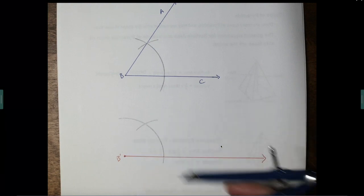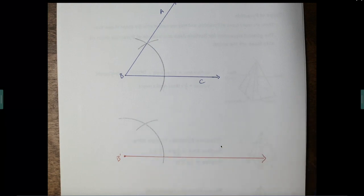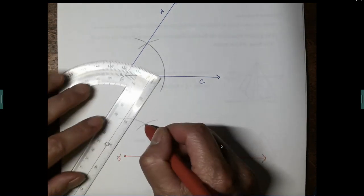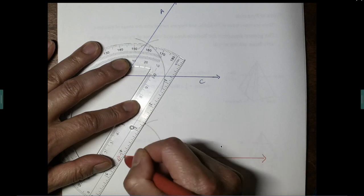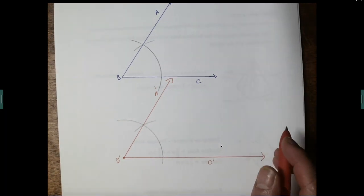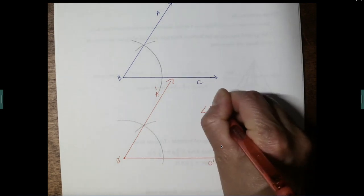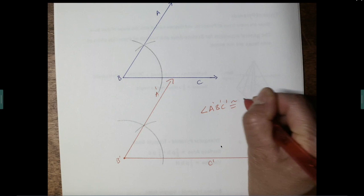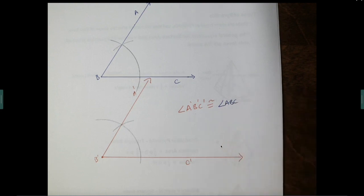This arc corresponds to that arc, and this intersection point corresponds to that intersection point. We now have two points, and two points determine one unique line. Connect these two points — this intersection point and your vertex — to finish the copy. We know that angle A'B'C' is congruent to angle ABC. There is our congruent statement.